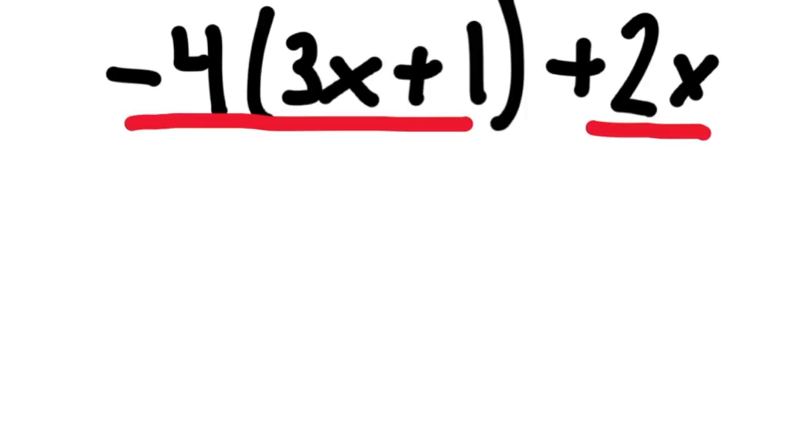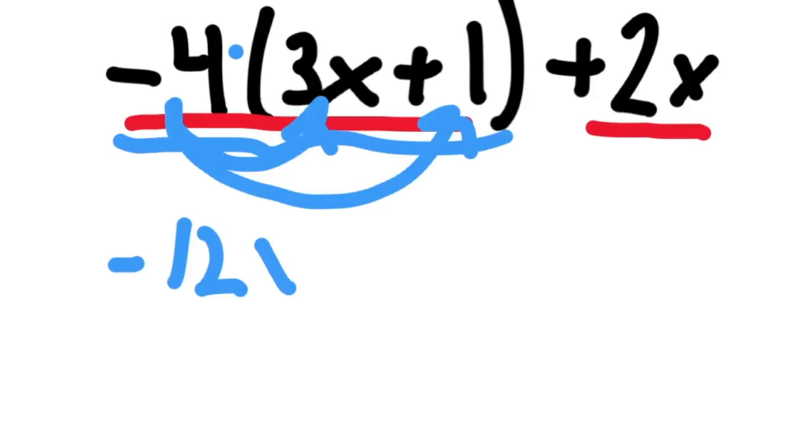But the first term is a little too complicated and can be simplified using the distributive property. -4 times the quantity (3x + 1): we can distribute the -4, multiply that times each term inside the parentheses, so that's -12x.